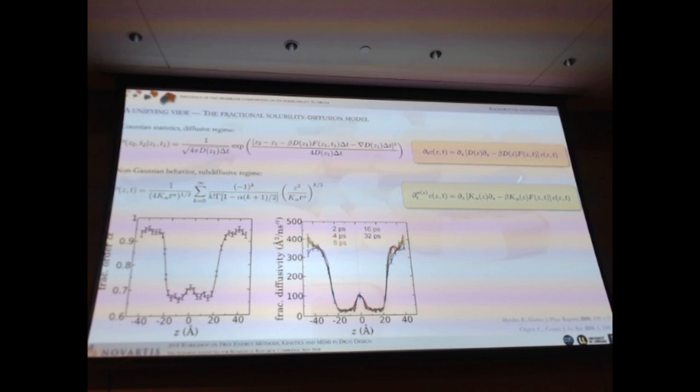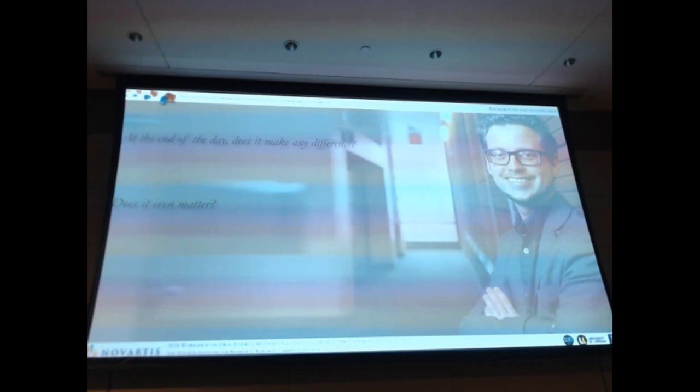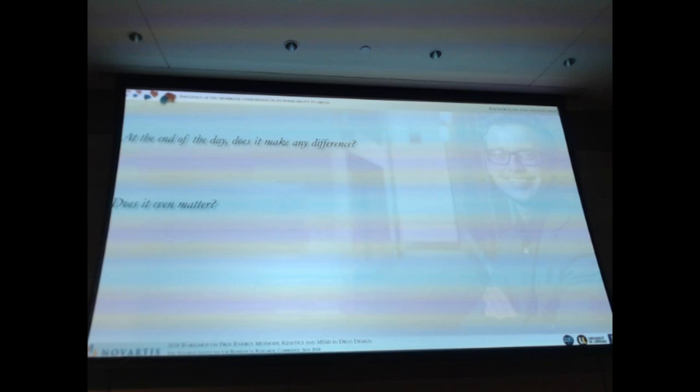We kind of formalized this and we call that the fractional solubility diffusion model. So it's a fractional version of the Smolikovsky equation, which gives you two things. It gives you the fractional order. And as you can see what the fractional order is, close to one in water and 0.65 in the middle of the binder. It also gives you the fractional diffusivity. Well, so this is all nice and dandy, but as John Codera asked at the end of two years ago, so at the end of the day, does it even make a difference? And does it even matter?